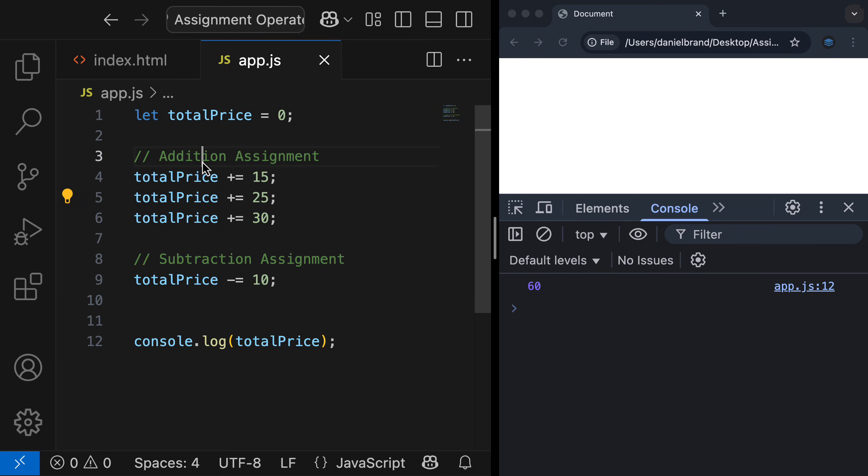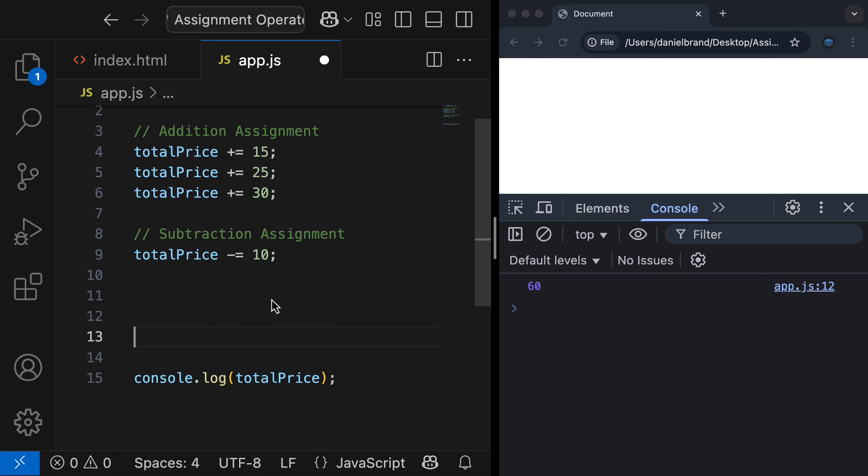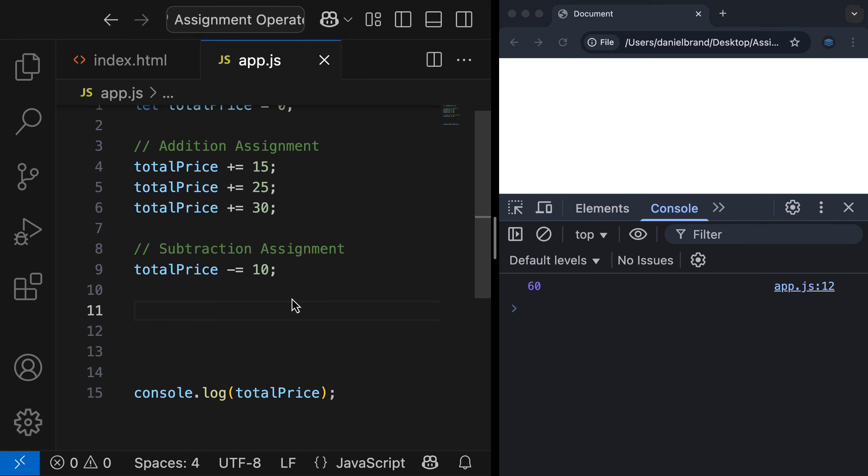Now, as I mentioned, addition assignment and subtraction assignment are by far the most common types of compound assignment you'll be performing in JavaScript. But let me just go do multiplication and division so you can see those in action as well.